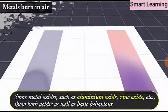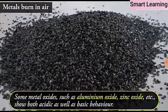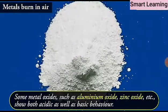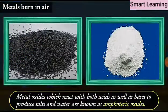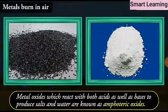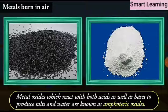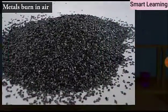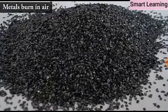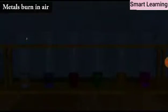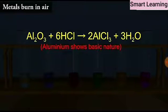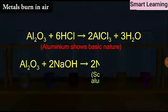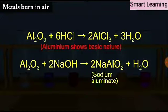But some metal oxides such as aluminum oxide, zinc oxide etc. show both acidic as well as basic behaviour. Such metal oxides which react with both acids as well as bases to produce salts and water are known as amphoteric oxides. Aluminum oxide reacts in the following manner with acids and bases. The reaction being: Al2O3 plus 6HCl gives 2AlCl3 plus 3H2O. Al2O3 plus 2NaOH gives 2NaAlO2, sodium aluminate plus H2O.